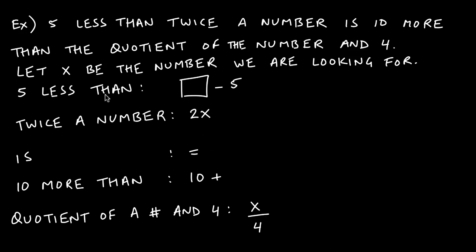Let's look at a couple more examples. We have: 'Five less than twice a number is 10 more than the quotient of the number and four.' The first thing we do is define our variable: let x be the number we're looking for. Now we read in chunks. 'Less than' is a phrase we need to be careful of. 'Twice' means multiplication by two. 'Is' means equal. 'More than' means add. 'The quotient of' means divide.